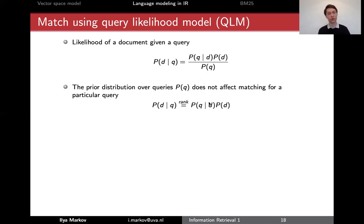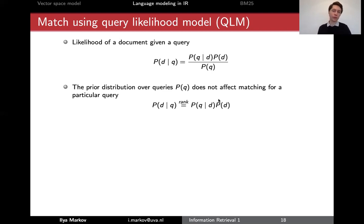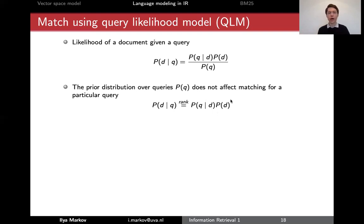That means that if we rank documents according to one formula, the ranking will be exactly the same as if we rank them according to the other formula. Looking more closely, we now have the component — the probability of a query given a document — and the prior probability of the document.